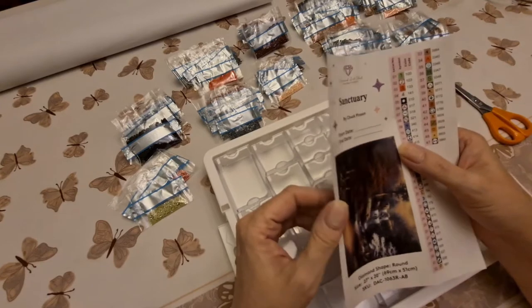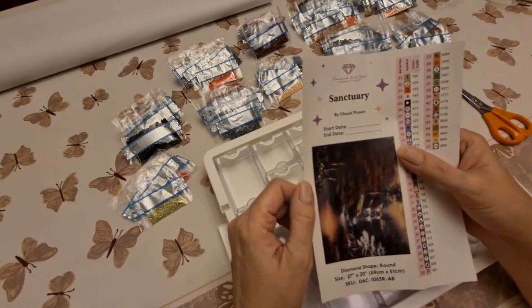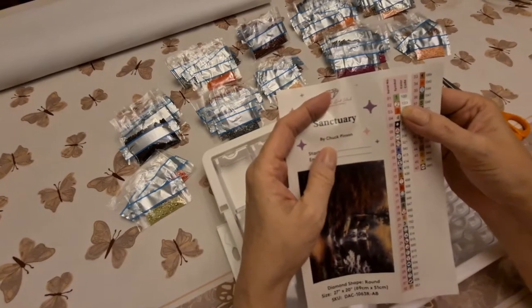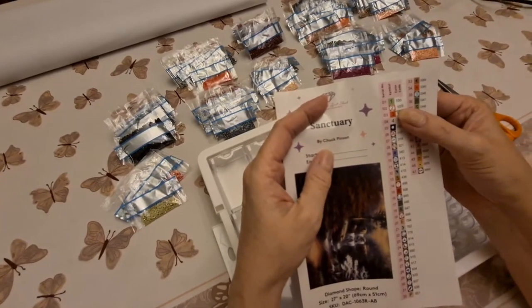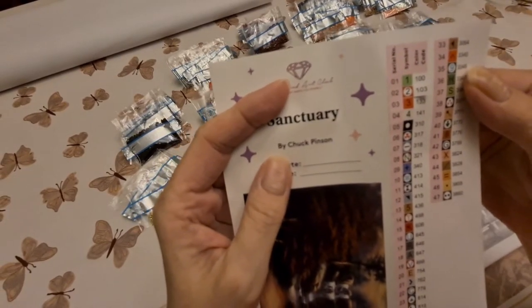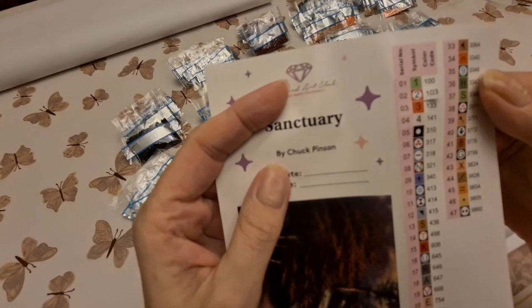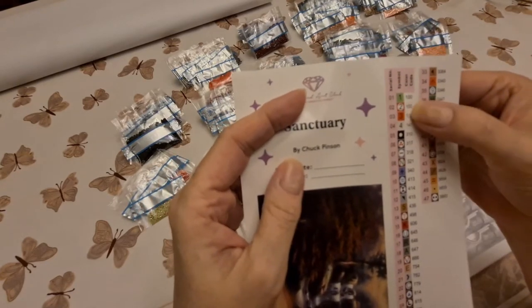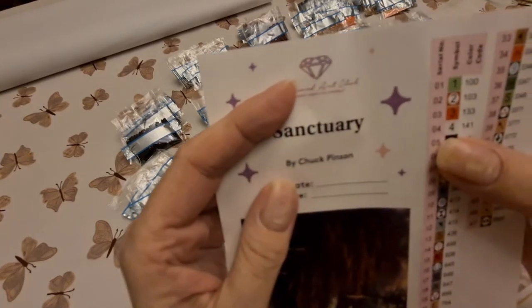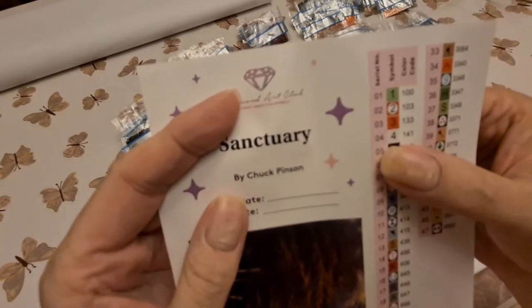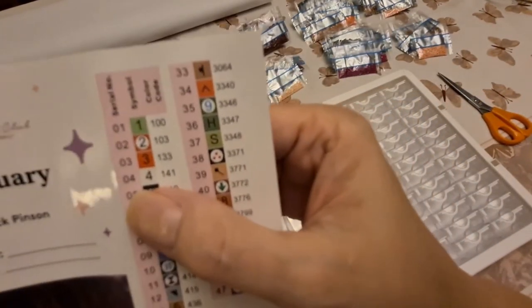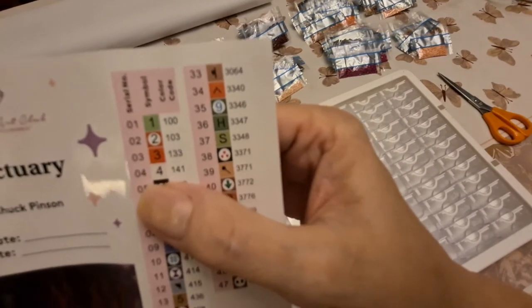DAC sends you stickers you can peel off and put in your log book for start and end dates. And these stickers you can just put on your containers. With Diamond Art Club, if this thing will focus for me...